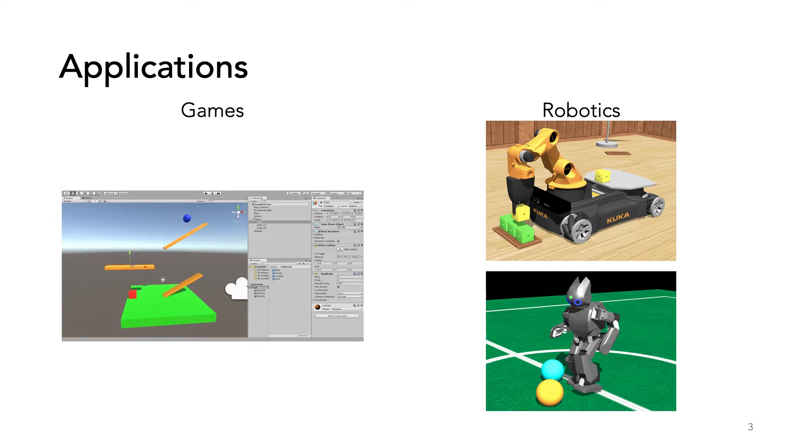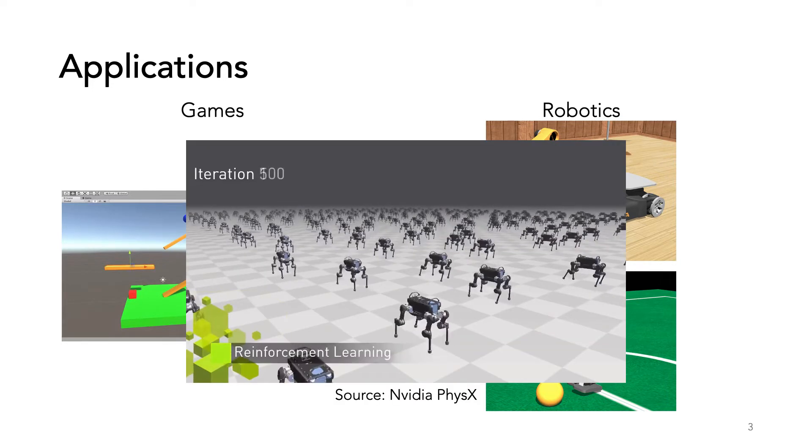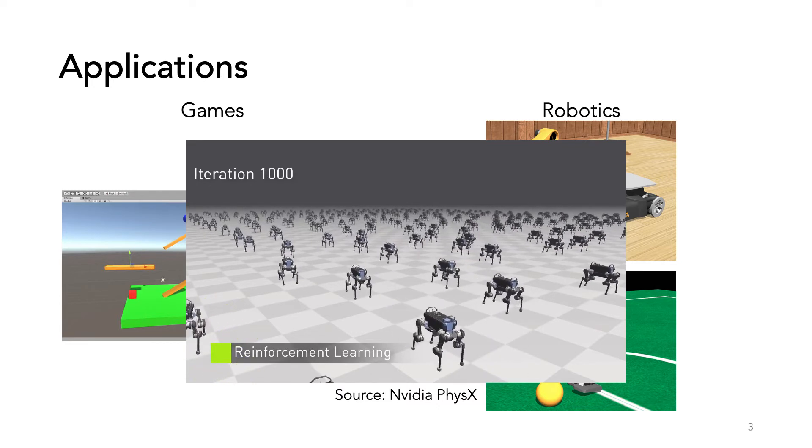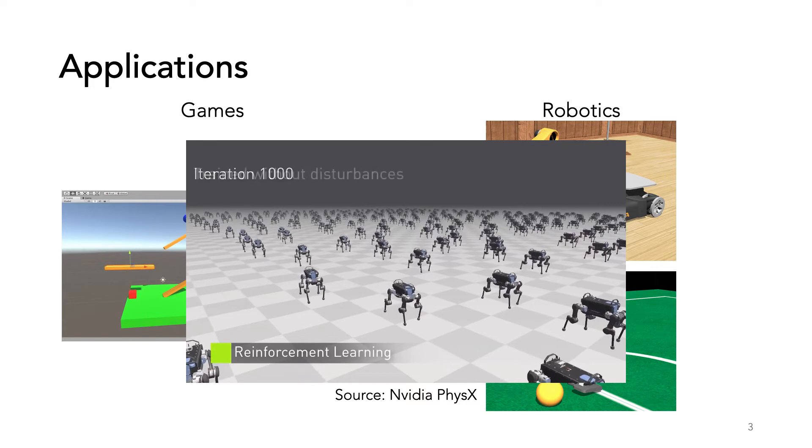In robotics, it is common to use rigid simulation with reinforcement learning. Here, for example, a robot learns to walk through thousands of simulations using NVIDIA's PhysX engine.